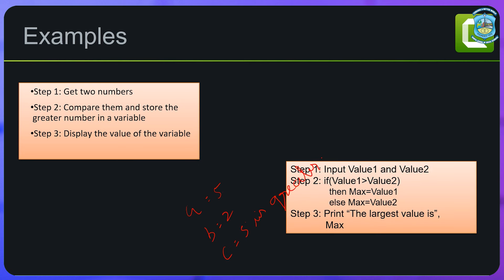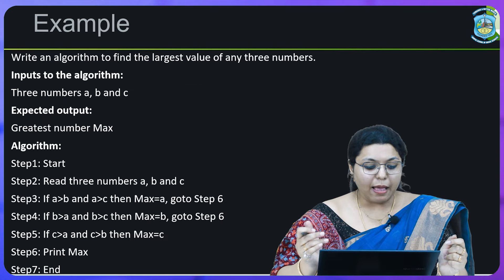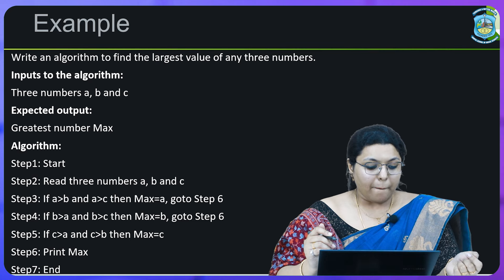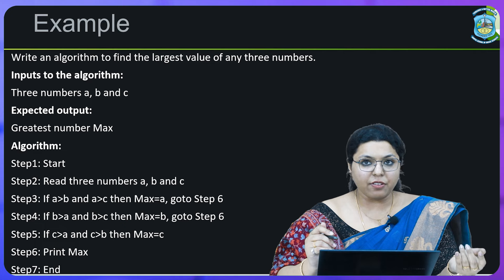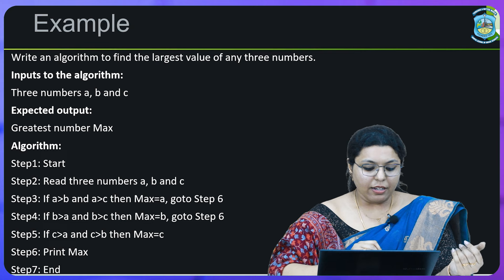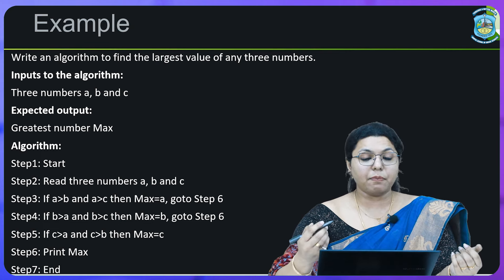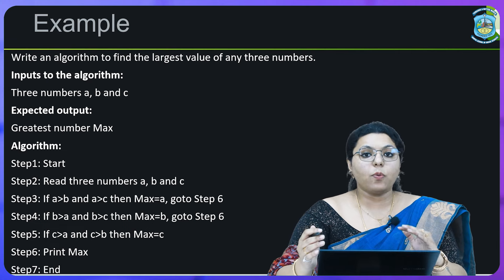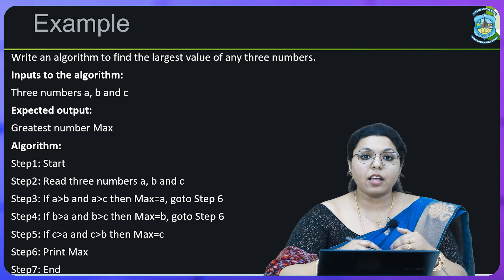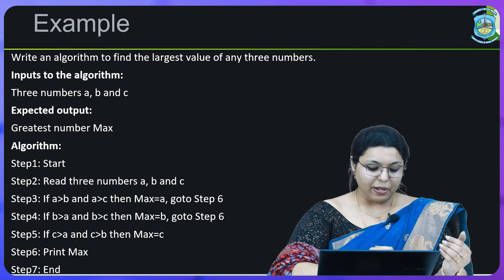The second way uses programming terminology: Step 1 — input value 1 and value 2; Step 2 — if value 1 is greater than value 2 then maximum value is value 1 (if 5 is greater than 2 then max is 5), else maximum value is value 2; Step 3 — print the largest value is max. Another example: write an algorithm to find the largest value among three numbers a, b, and c — check a with b and c, b with a and c, and c with a and b, then print max and end.